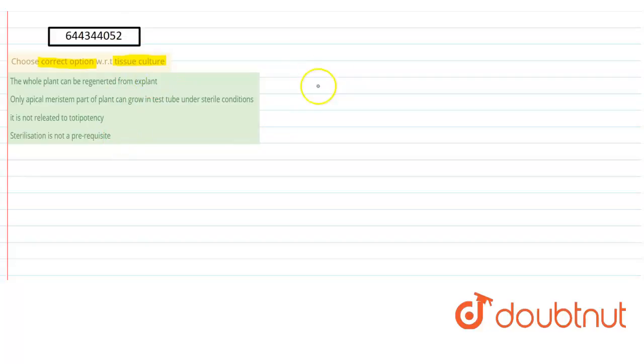So what is tissue culture? It is a biotechnological technique, one of the techniques under biotechnology. And what is the basic concept? The whole plant is generated from an explant. A whole or complete plant can be grown from an explant.